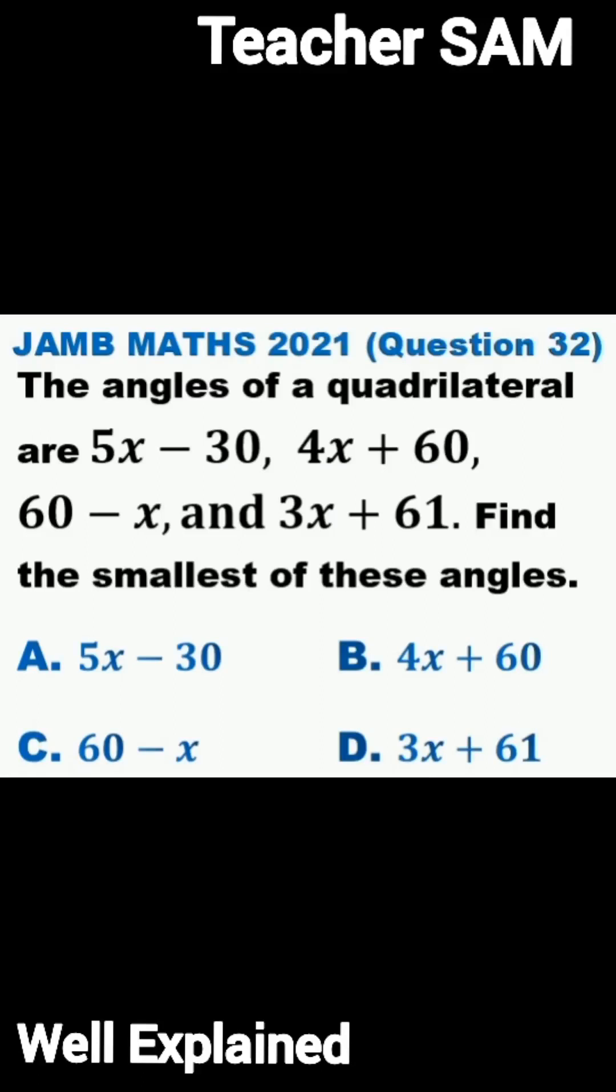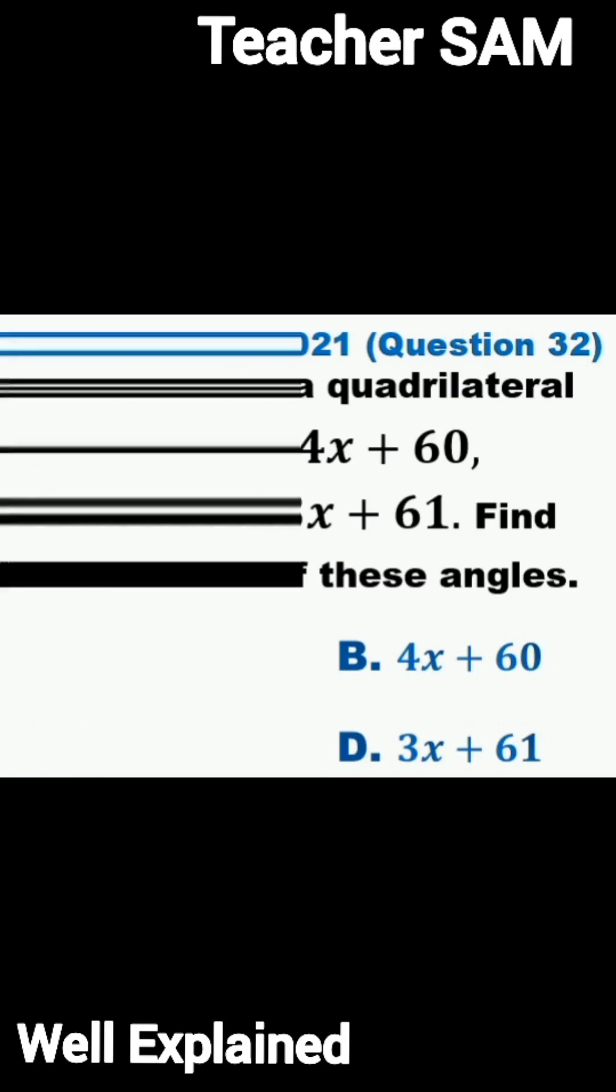The angles of a quadrilateral are 5x minus 30, 4x plus 60, 60 minus x, and 3x plus 61. Find the smallest of these angles.